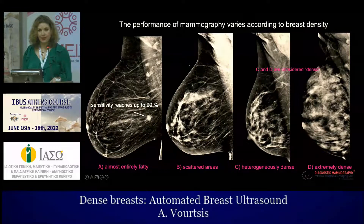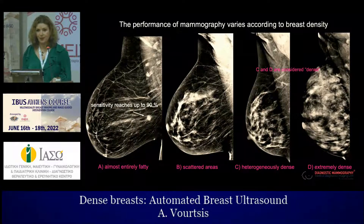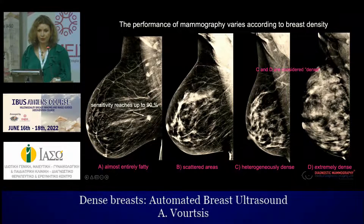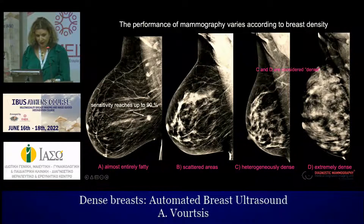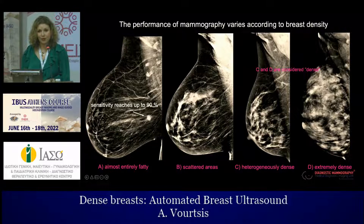Why is there a continuous conversation about breast density? It is because breast density affects the sensitivity of mammography. In women with fatty breasts, we have high sensitivity of mammography, reaching up to 90%. However, even if there is an area of the breast that is dense, a cancer can be missed.